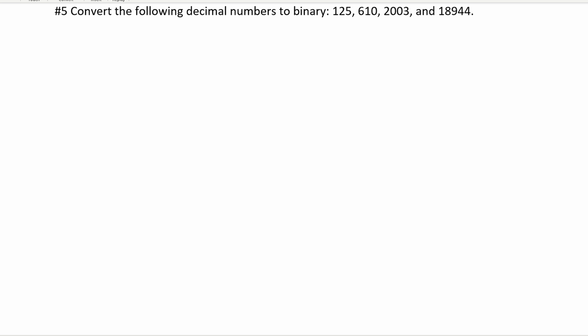We're being asked to convert the following decimal numbers to binary. We're starting out with 125 for this problem. When we're finding the values to look at, we're going to look at the max values for our base — 2 raised to some number. This number has to be slightly greater than 125. Once we find the number that's greater than 125, we take 1 less than that, because we want to still be under 125. So 2 to the 7th is slightly greater than 125, so we're going to start with 2 to the 6th.